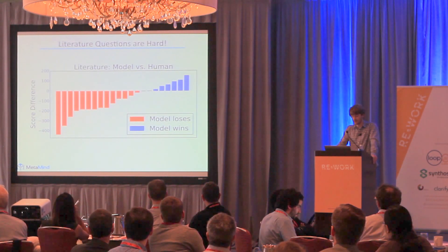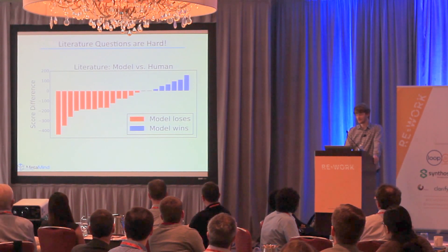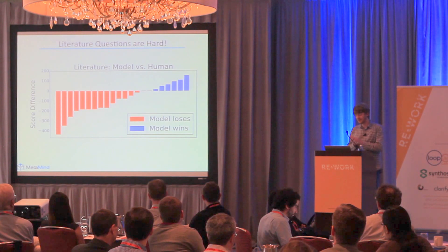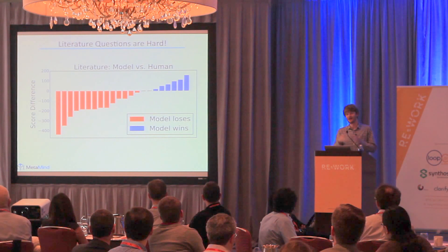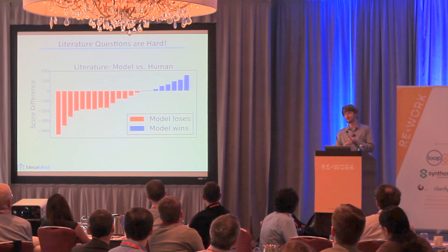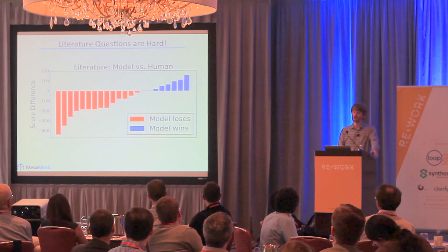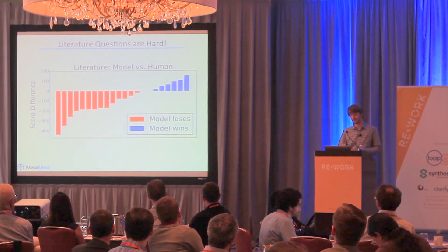Of course, that doesn't always work. For literature competitions, the model still loses about two-thirds of the games compared to a human. The problem was that the algorithm didn't actually have access to the actual books — it only had access to question-and-answer pairs and eventually some Wikipedia articles. But I think eventually the algorithm will probably beat humans more consistently, just like IBM Watson.